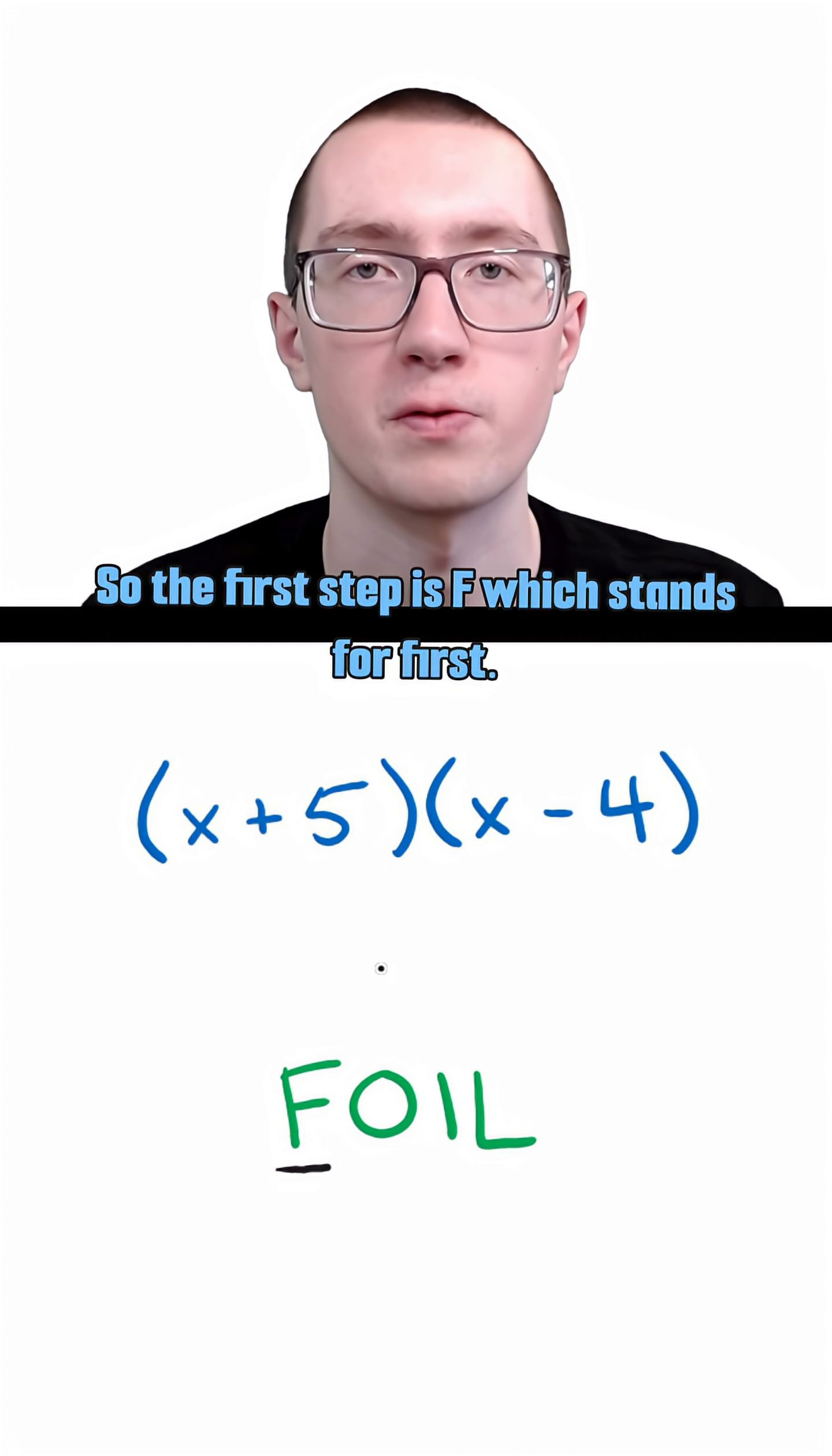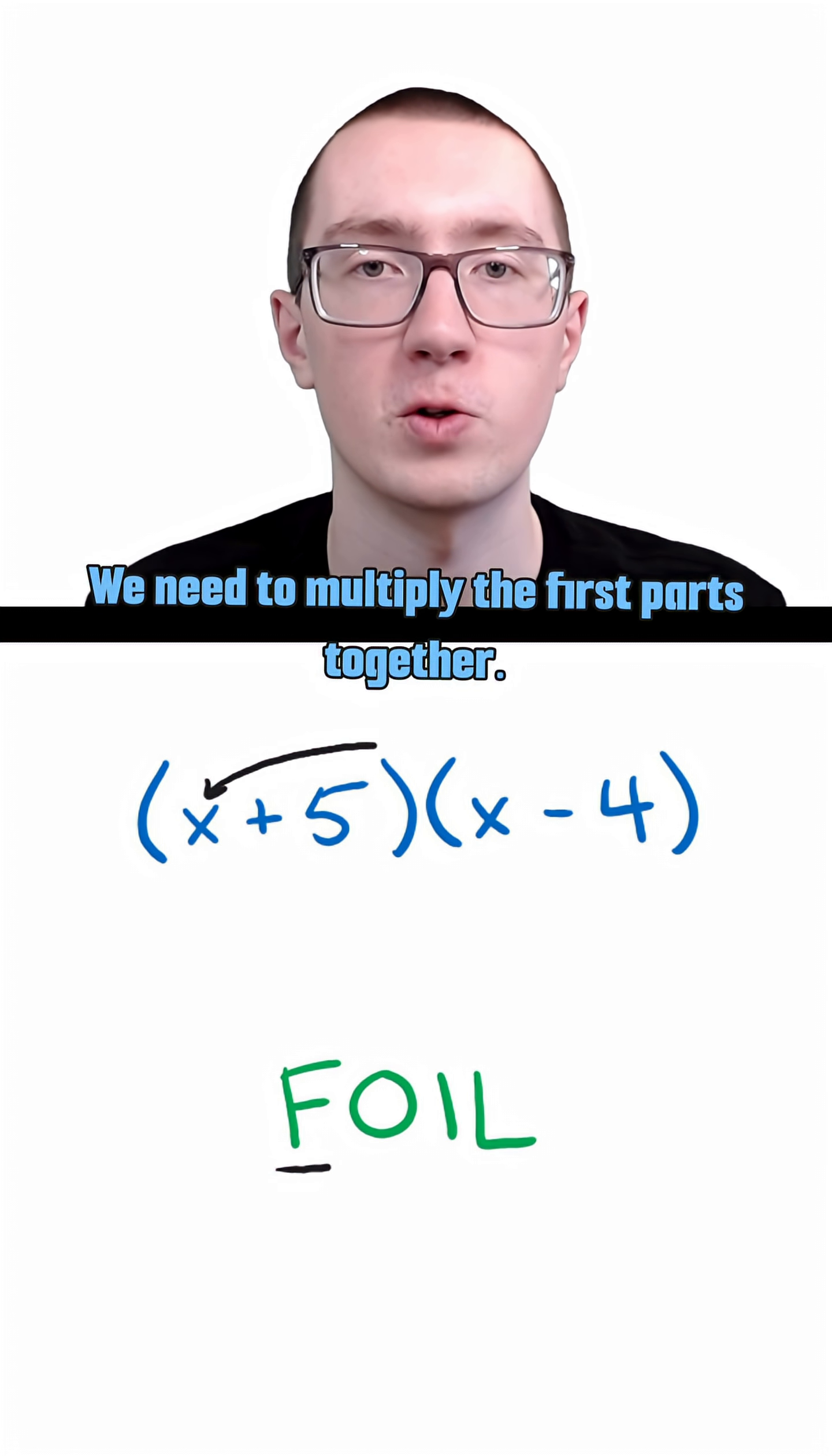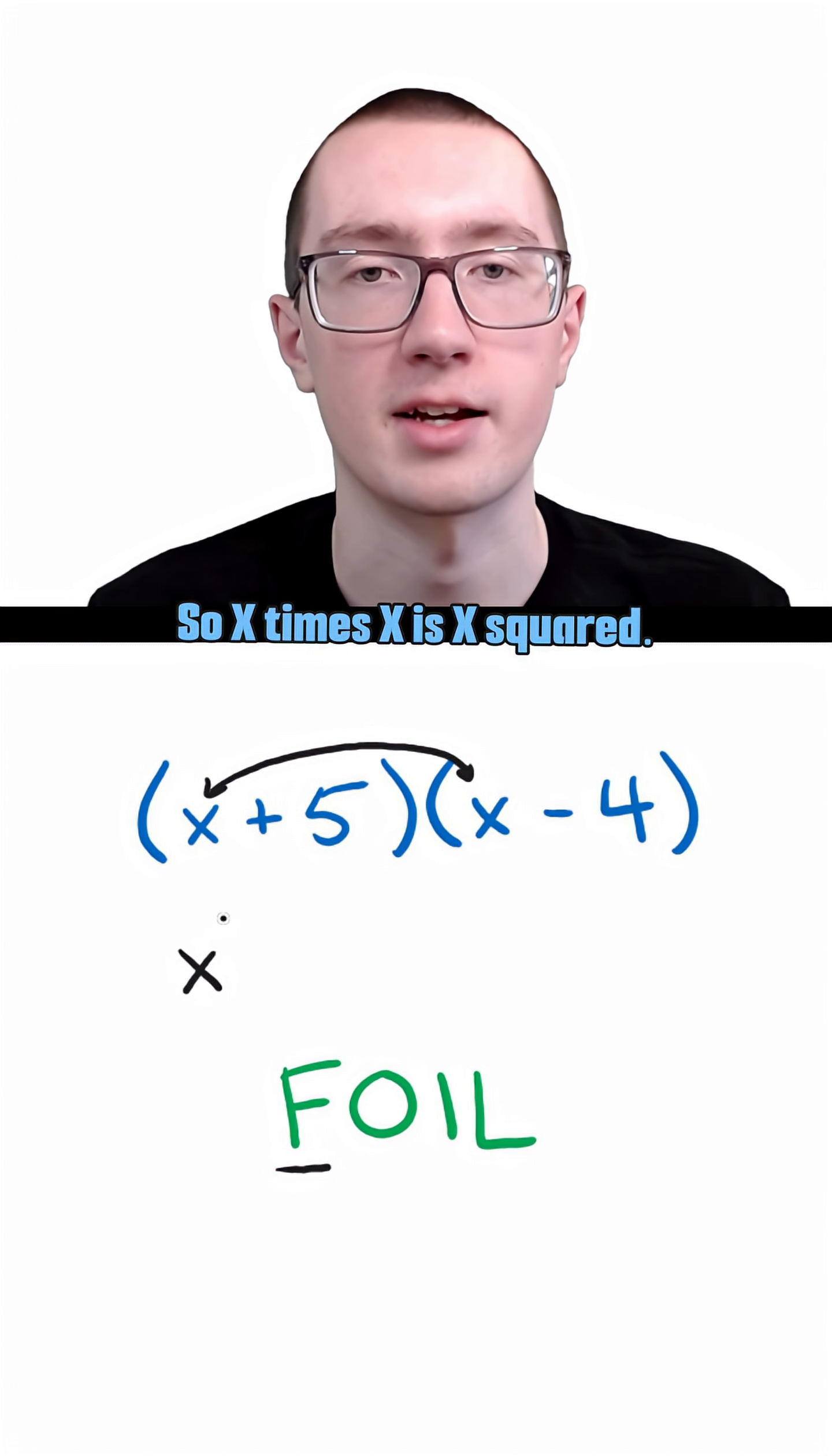So the first step is F, which stands for first. We need to multiply the first parts together. So x times x is x squared.